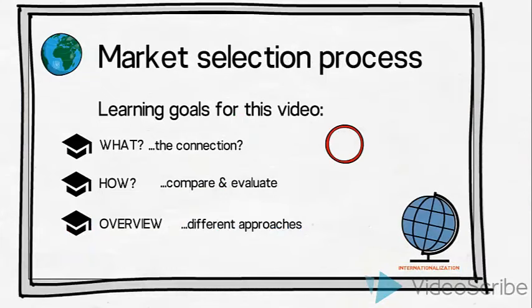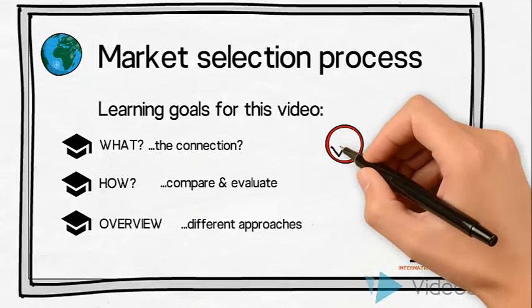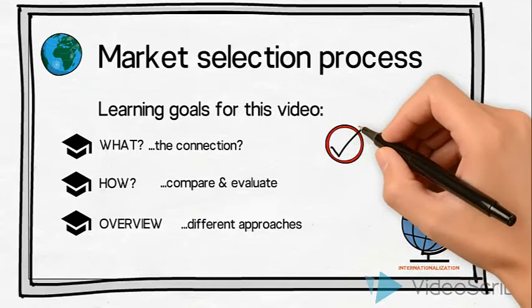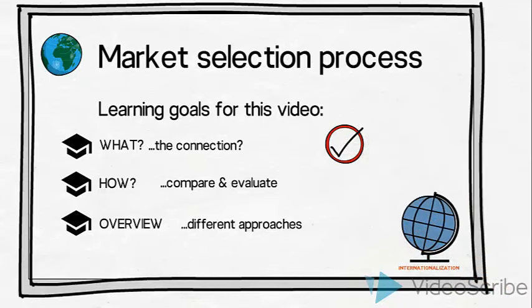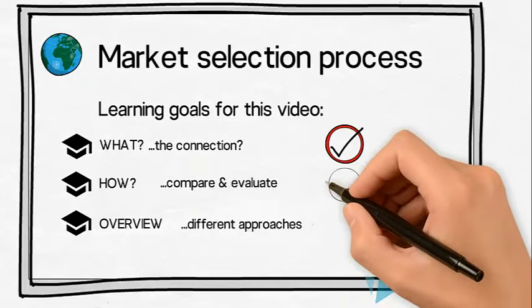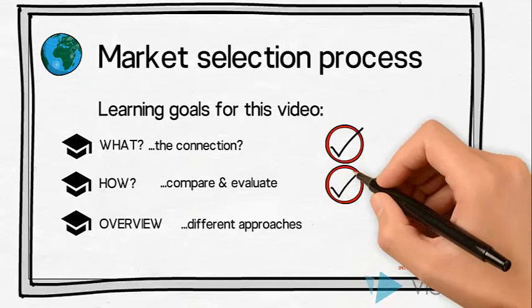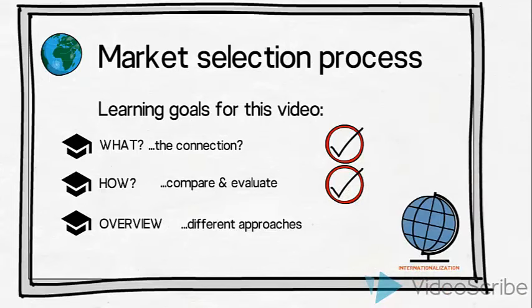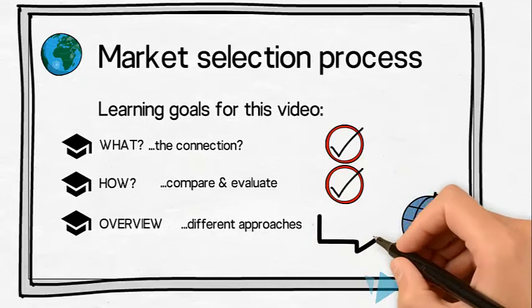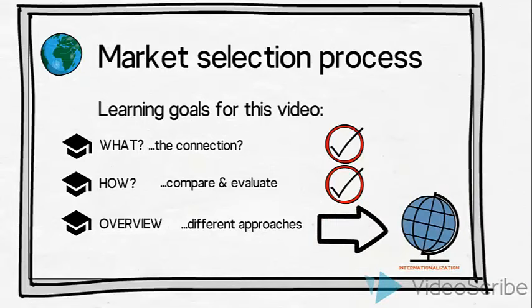We have now established what the market selection process is and how it is connected to the rest of an organization's internationalization process. We have also gained knowledge of how to compare and evaluate two proposed markets by addressing a combination of different factors. Let us move on to the final part of this video, where we will provide an overview of different approaches to a market or country selection process.